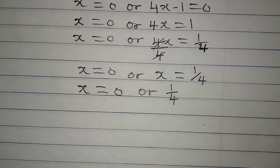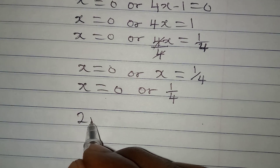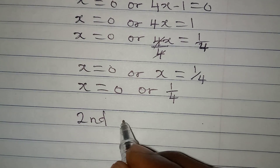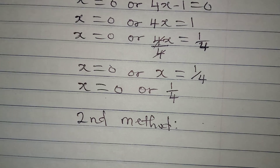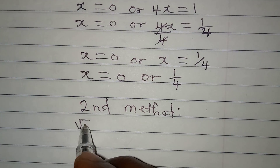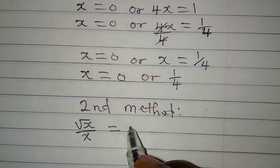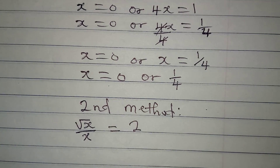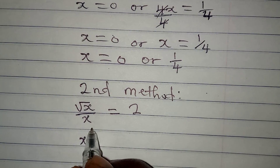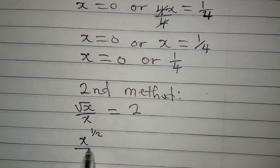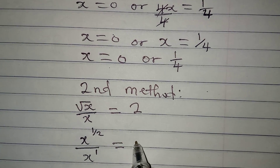Now let's use the second method and we will know which one is more effective. The equation is root x over x equal to 2. Do you know that this is the same thing as x to the power of 1 over 2 divided by x to the power of 1, and this is equal to 2.